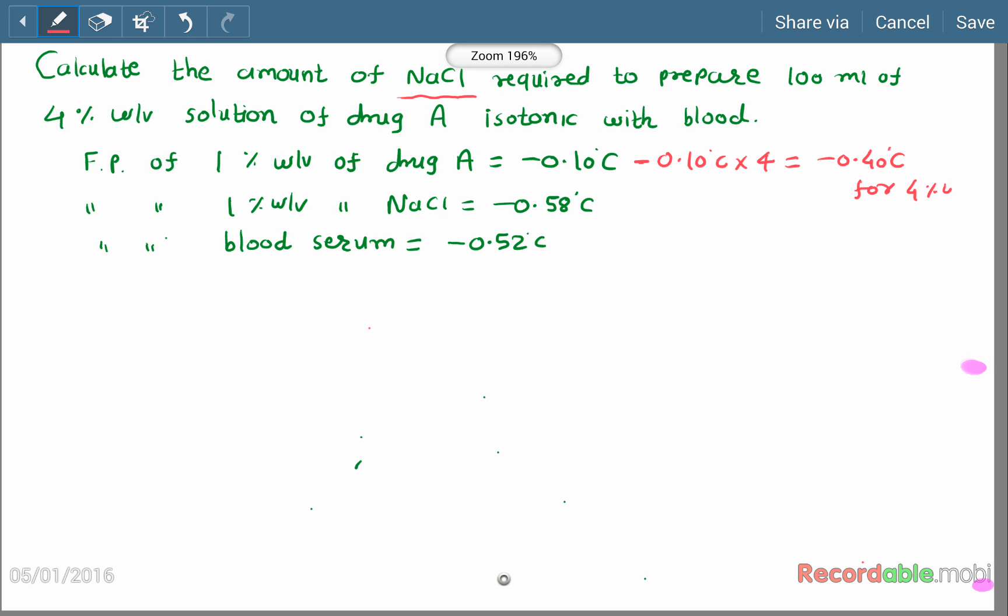So let us use the formula: x = (0.52 - a) / b